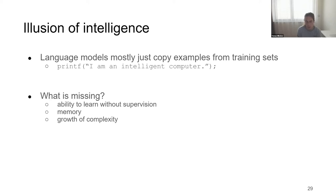Sometimes I feel people overestimate current language models. If a computer produces text that looks very smart, it doesn't necessarily mean the computer is actually saying anything — it can be repeating sentences from training data written by humans. A language model producing 'I am an intelligent computer' doesn't mean we created a conscious being. I think this is often misrepresented in the media. We should be optimistic but not overselling the achievements so far.